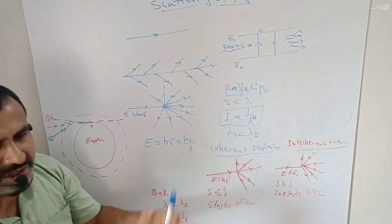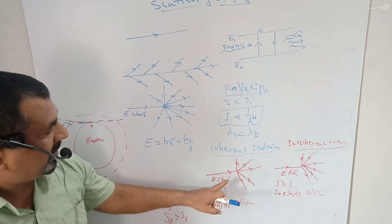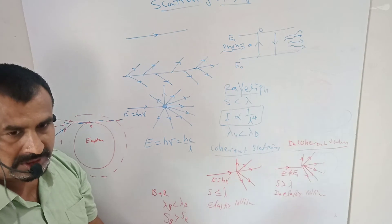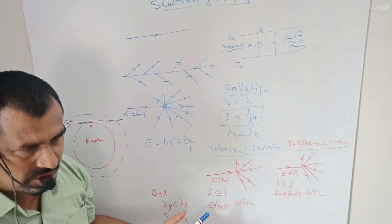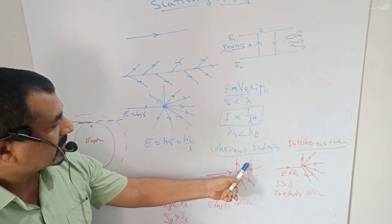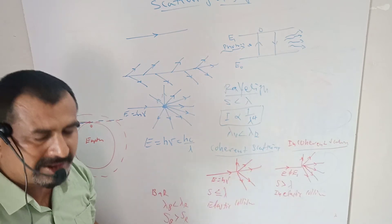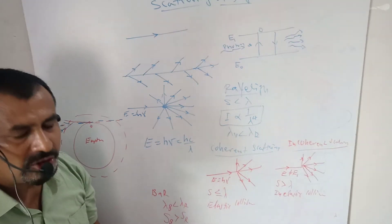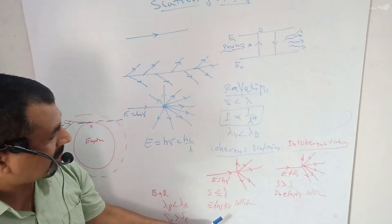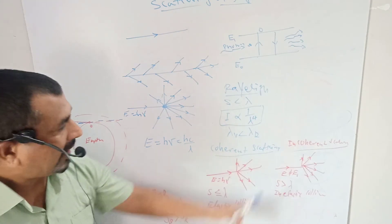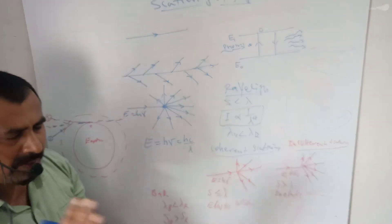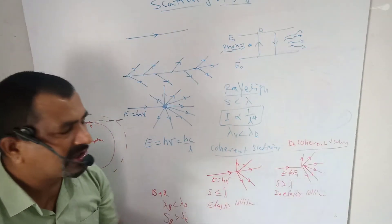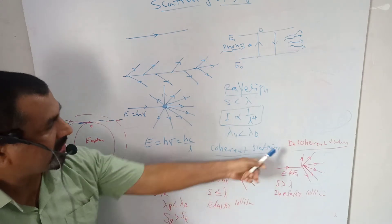Coherent scattering involves an elastic collision between the photon and the particle in the medium. A collision in which kinetic energy is conserved is called an elastic collision. Examples of coherent scattering are Rayleigh scattering and Tyndall scattering. Scattering of light in which the energy of the scattered light is different from that of the energy of the incident light is called incoherent scattering.